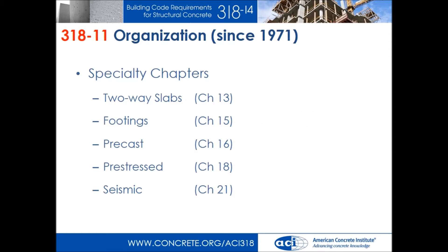As we moved along, people wanted to add things to the code. Although all these topics were covered in 1971, they wanted to say more, so new chapters were created — for two-way slabs, precast, and others. But the intent was: if you have a two-way slab, you still have to keep chapters 7 through 12 in mind and then read chapter 13 and understand how it interacts. If the slab is precast, you read the precast chapter. If the columns are pre-stressed precast, chapter 18 might affect chapter 16. You can see the growing difficulty in understanding where things are in this code.